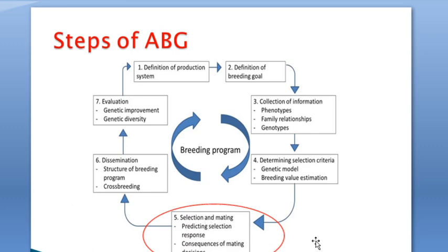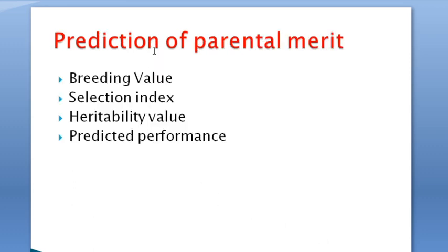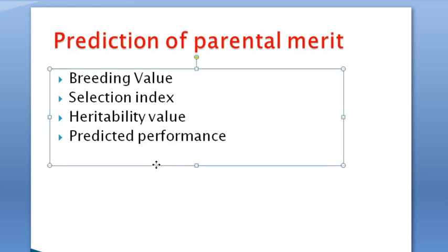Before the selection decision or breeding decision is taken, the following elements must be estimated: the breeding value, which was done before; the selection index, which considers not only the genetic merit of individuals but also the economic value of each particular trait or selection criteria; the estimate of heritability; and the prediction of future response—the performance of offspring before mating even happens.